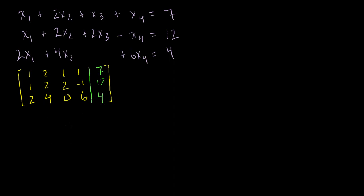So the first thing I want to do is get this into a form where the leading coefficient in any row is a 1, and every other entry in that column is a 0. In the past I made sure everything below it was 0, but now I'm going to make sure everything else in that column is 0 — above and below. That form is called reduced row echelon form.